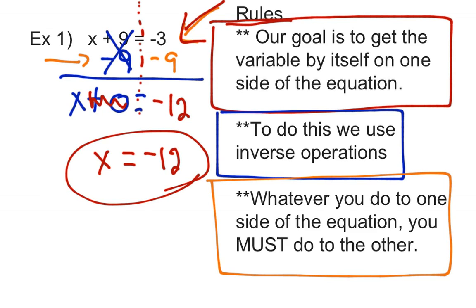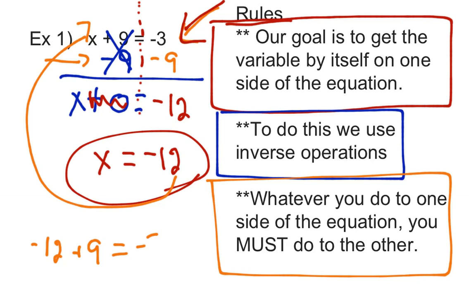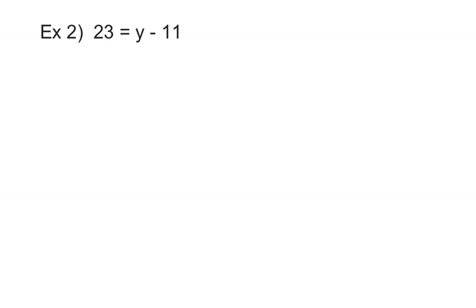You can check your answer by plugging it back into the original equation. If I plug negative 12 in for x: negative 12 plus 9. Signs are different, so I subtract — 12 minus 9 is 3, keep the negative sign — and I get negative 3. That checks out, so I know I got the correct answer. I'm going to do one more example for you, then I'll turn you loose on examples 3 and 4.